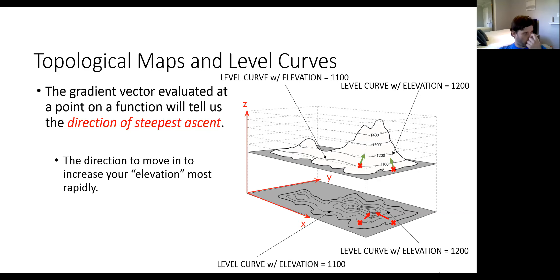Let's pick a third point on the backside of the mountain. If we map that point down into our topological map, the gradient vector is going to point in the direction we should walk in the x-y plane to move us as rapidly as possible towards the top. The gradient vector for this point moves us towards the top as rapidly as possible from that far-side location, up the mountain that way.